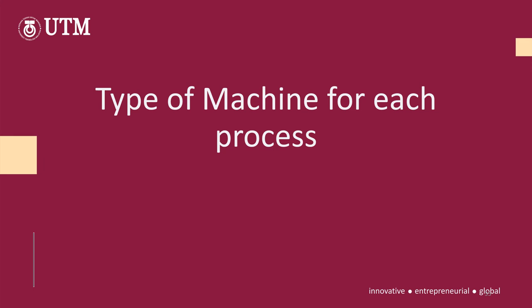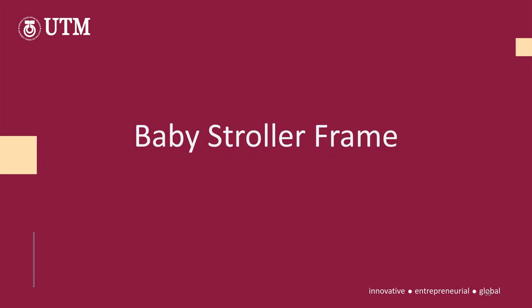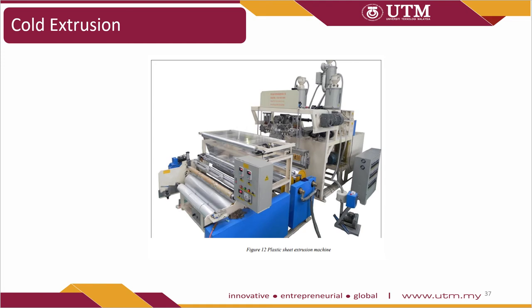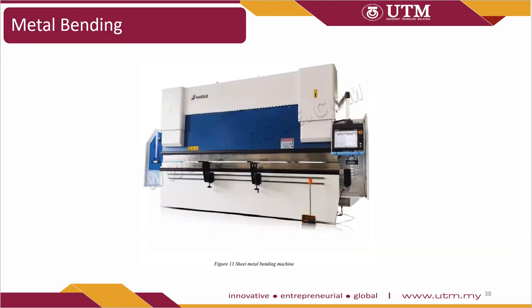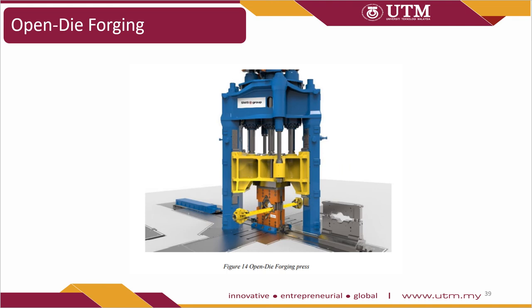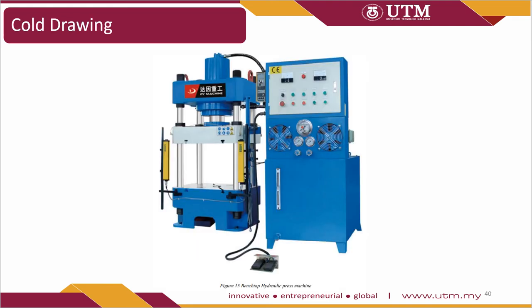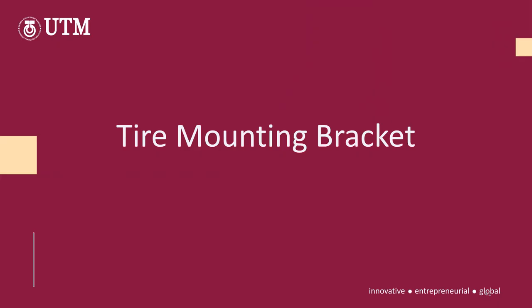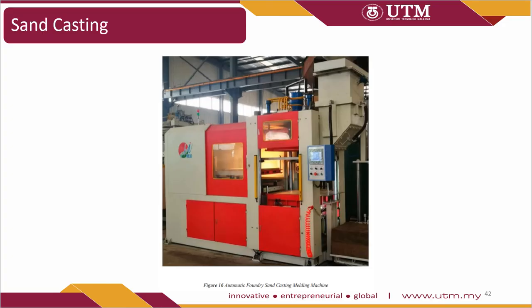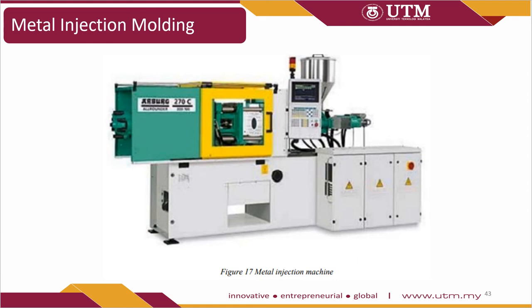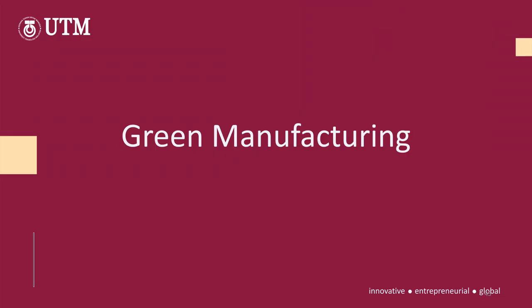For the type of machine used in each process: for the baby stroller frame, a plastic sheet extrusion machine is used for cold extrusion, a sheet metal bending machine for metal bending, an open die forge press for open die forging, and a hydraulic press machine for cold drawing. For the tire mounting bracket, an automatic foundry sand casting machine is used for sand casting, a metal injection machine for metal injection molding, and a CNC machine for CNC machining.